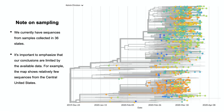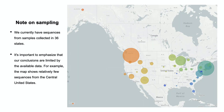We currently have sequences from samples collected in 36 states. While this data enables us to infer many useful characteristics of the outbreak and track its spread in real time, it's important to emphasize that our conclusions are limited by the available data. For example, the map shows relatively few sequences from the central United States. This is not because COVID-19 isn't circulating in these areas, or that these cases are not as crucial to understand. Rather, we just don't have much data available from these areas. Keep in mind that the size of each circle on the map indicates how much data is currently available from that area, rather than the true size of the outbreak.